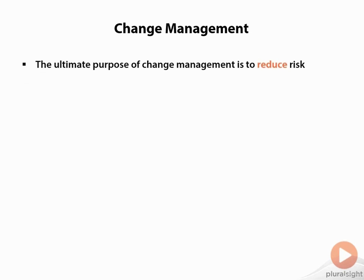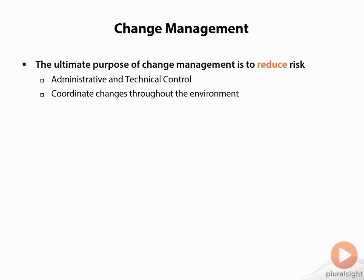What is change management? Everyone talks about it — some organizations do it very well, some not very well at all, and most fall somewhere in between. The ultimate purpose of change management is to reduce risk. We can have administrative controls or management controls, and we can also have technical controls or software or systems that can automate some of that process and make sure that it's enforced, so that people understand their jobs depend upon doing things in a very programmatic and methodical way.